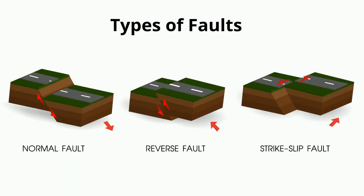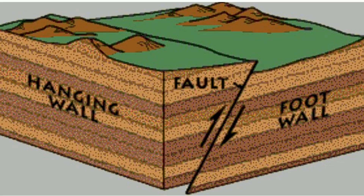There are three main types of faults: strike-slip faults, normal faults, and reverse faults. Let's first determine the difference between the hanging wall and the foot wall. In all faults except for vertical faults, the hanging wall is the block above the fault and the foot wall is below.